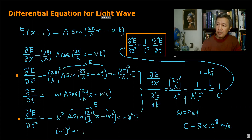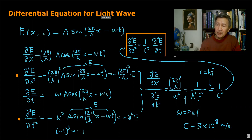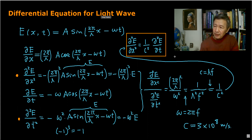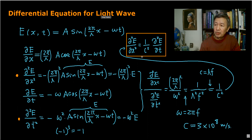Historically, Maxwell first derived this expression from his four equations, which is why we say Maxwell predicted electromagnetic waves. However, this same wave equation applies universally — it describes sound waves, seismic waves, water waves, and any mechanical wave. The form of the differential equation is identical; only the wave speed differs.